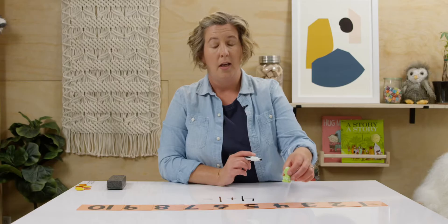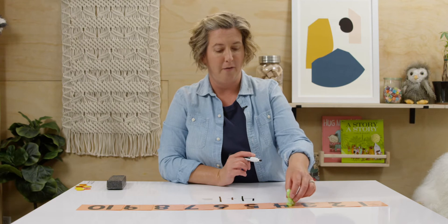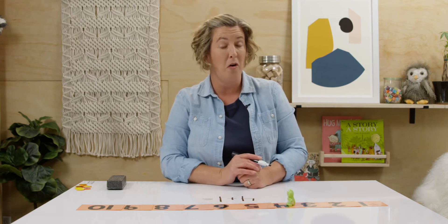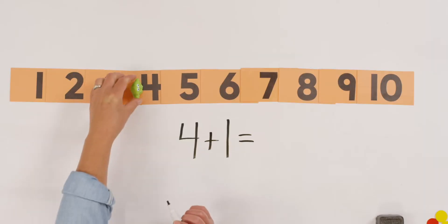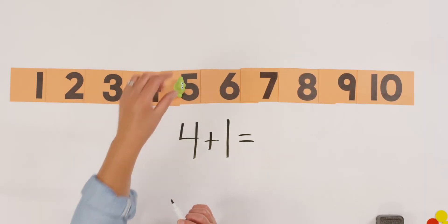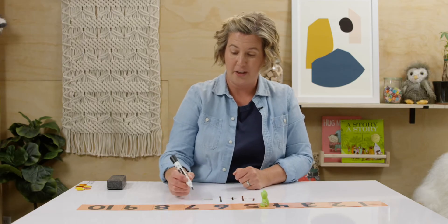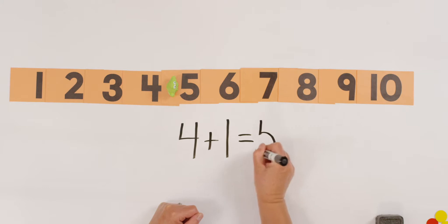Four! I'm going to put my froggy on four. You can put your counter. And let's hop forward one. Four and one more. What number did I land on? Five. That's my answer. Four plus one equals five. I bet some of you already even knew that. That's awesome. Let's try it again.